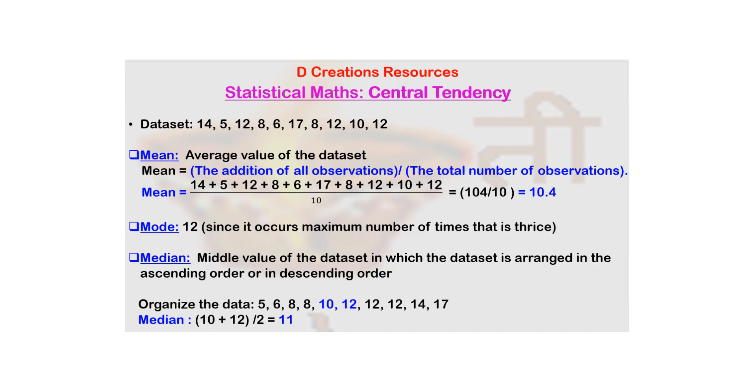If you recall, earlier we talked about central tendency and statistical measures of central tendency. Mean happened to be one of them. It's basically the average value of the dataset. For example, if there are 10 points, add these up and divide by 10 because that's the total number of data points, and what you get is the mean.